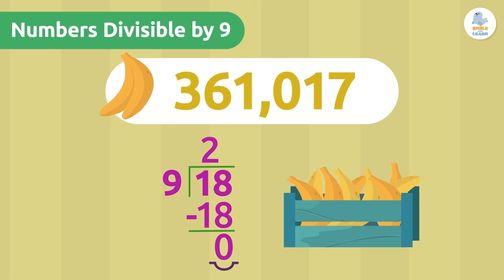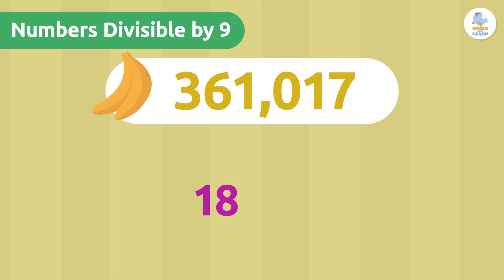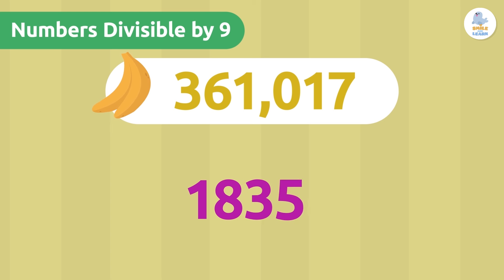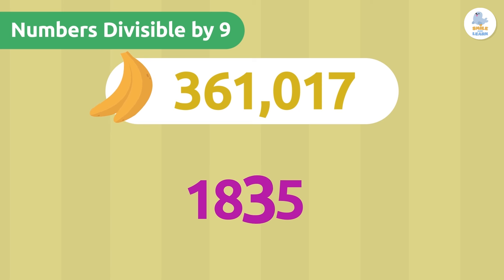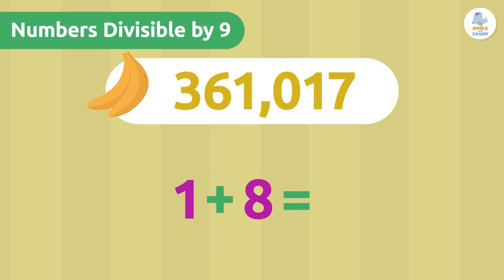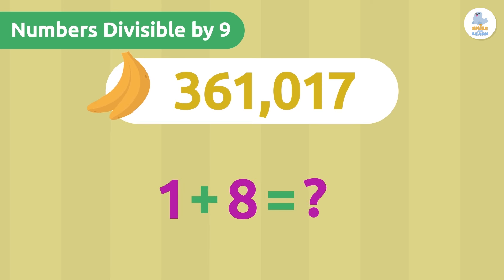But, as with the divisibility rule of 3, the result of the sum of the digits we want to check may be too large a number. What do you think we could do then? Exactly — we're going to do the same as before and add the digits again.